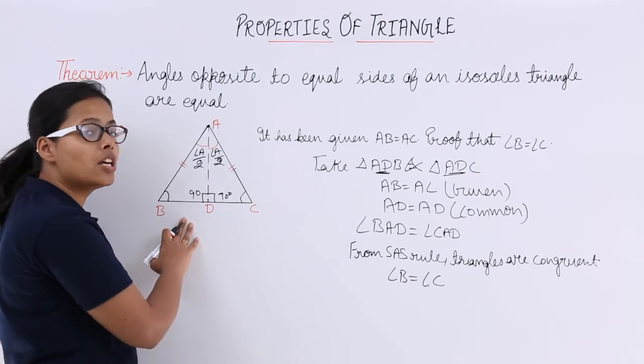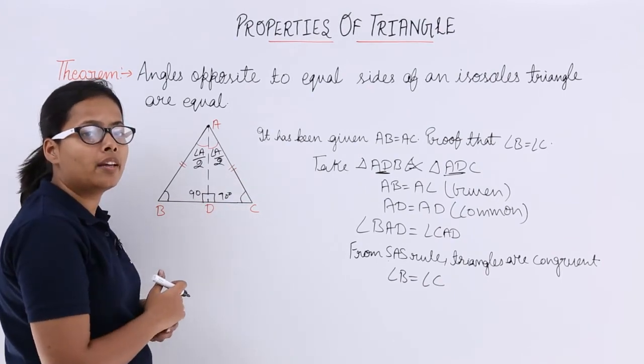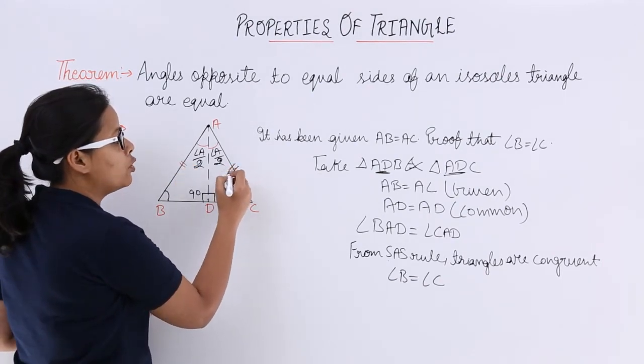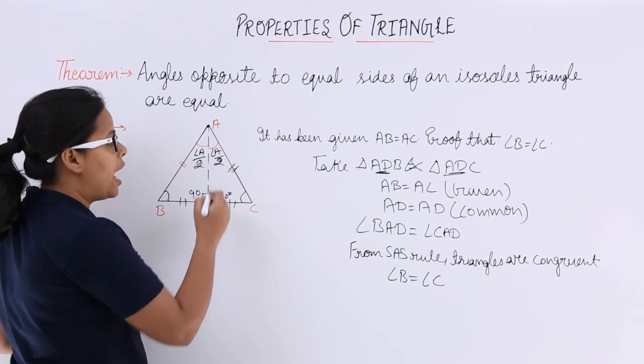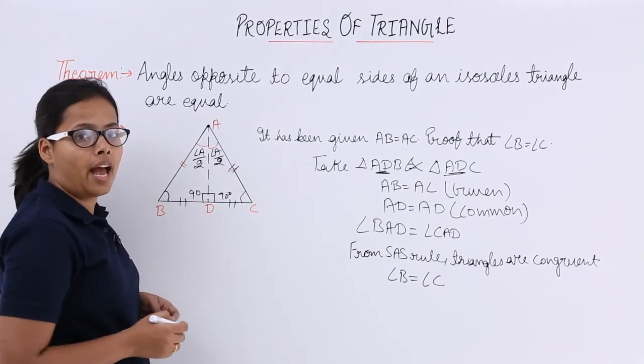That's why their angles will be equal and all their sides will be equal - this side will be equal to this side. AB will be equal to AC, BD will be equal to DC, and as you already know about the angles.